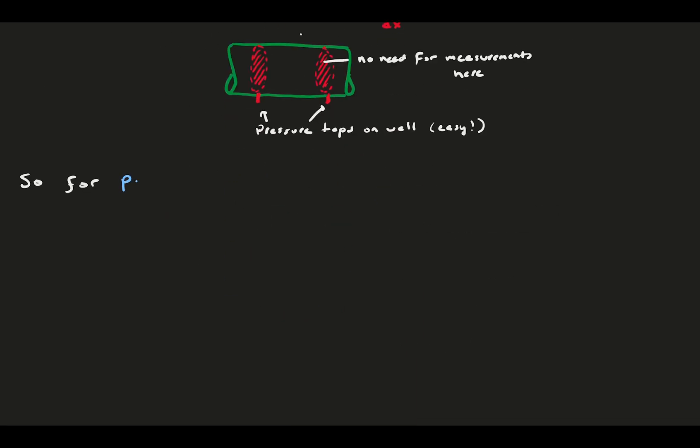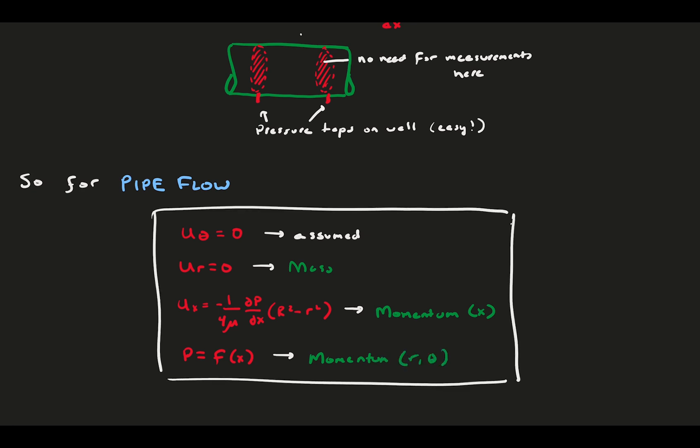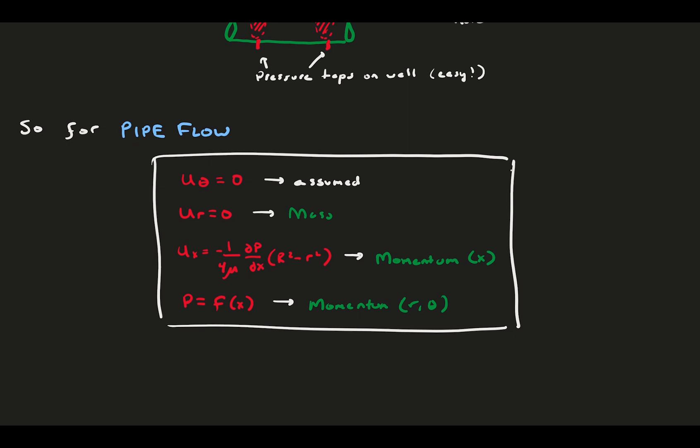To summarize, solving our conservation equations for pipe flow told us that u_theta was zero, as we assumed, u_r was zero because of the conservation of mass, and we got a detailed expression for the streamwise velocity from the x-momentum as a function of the pressure gradient. Further solving the other momentum equations got us a more detailed understanding of the pressure. And that's it for pipe flow. Let's review.